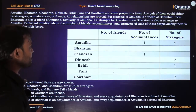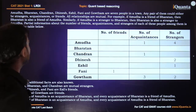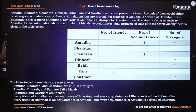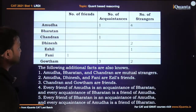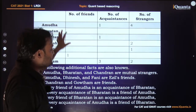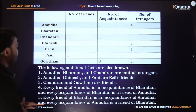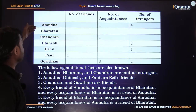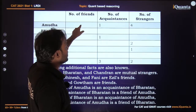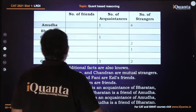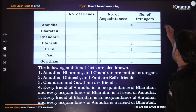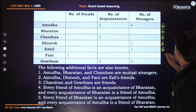Partial information about the number of friends, acquaintances and strangers of each of these people is given in the table. Now before we start with the additional facts, we know there are seven people, so for each person there are six others. Number of friends plus number of acquaintances plus number of strangers should add up to six in each case.